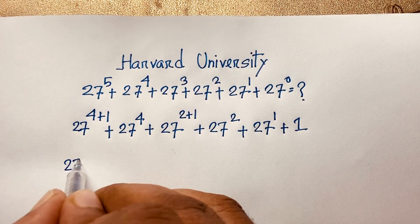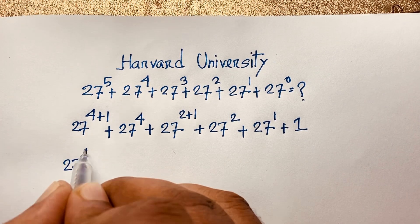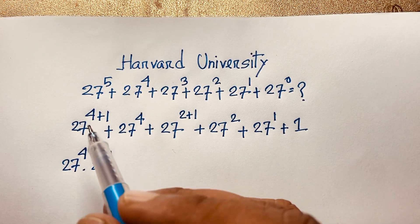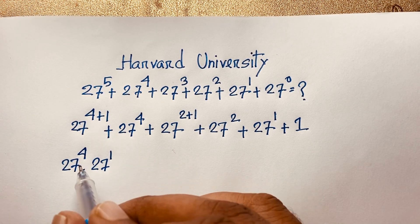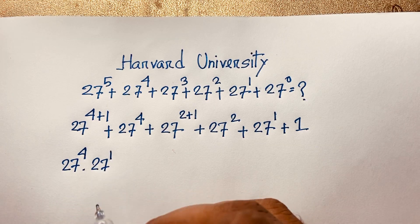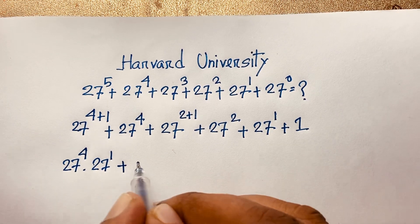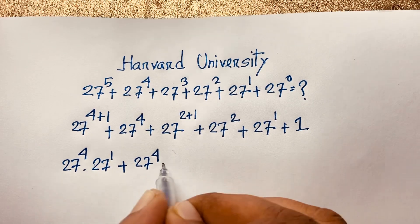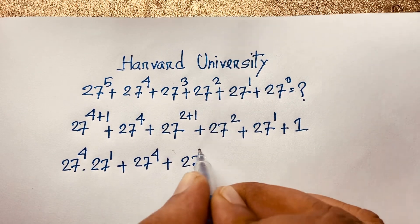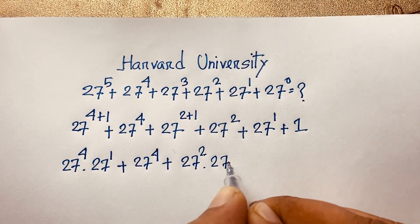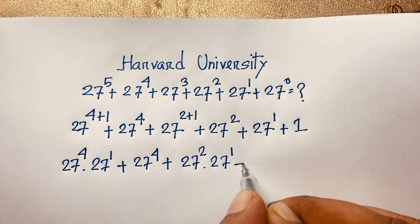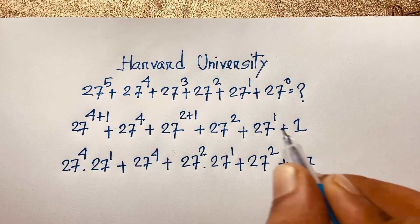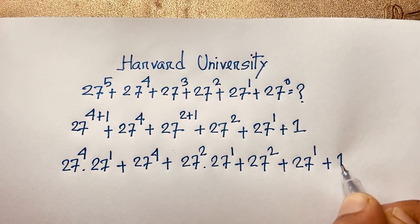Now I can see here is 27 power 4 times 27 power 1, because you know that a to the power n plus m equals a to the power n times a to the power m. Then here 27 power 4, plus 27 power 2 times 27 power 1, and this 27 power 2 plus 27 power 1 plus 1.